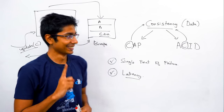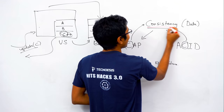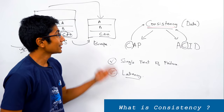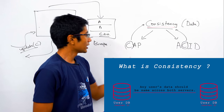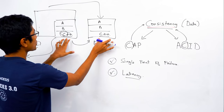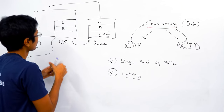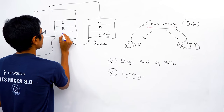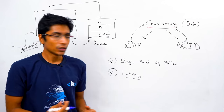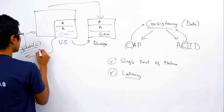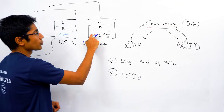We've solved the problem — except for one big monster called consistency. Consistency says that if you have multiple copies of data, they should be the same. C++ should be C++ everywhere. It seems like we can do that — but how do we propagate an update from one copy to the other?